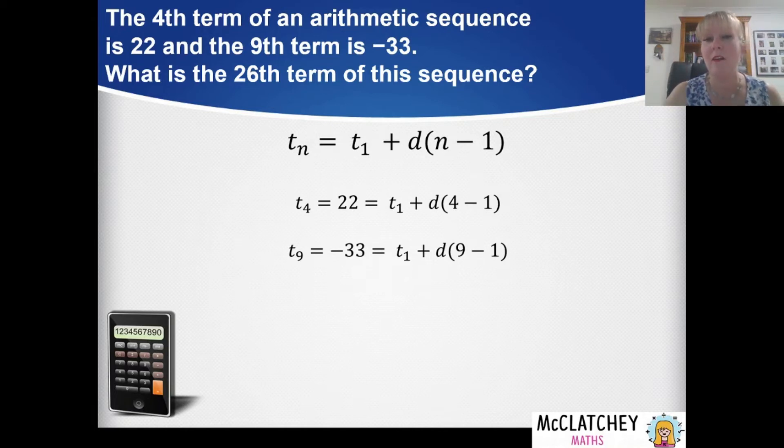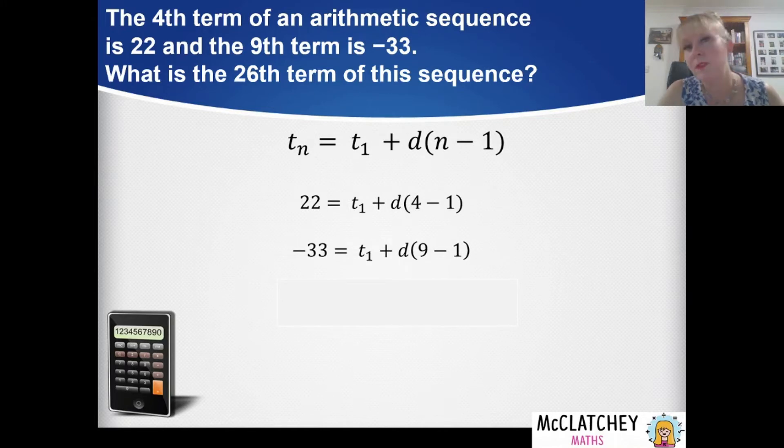We don't really need it because now if we take that information we've actually just got 22 equals the equation and negative 33 equals the equation and we can simplify that a little bit further.